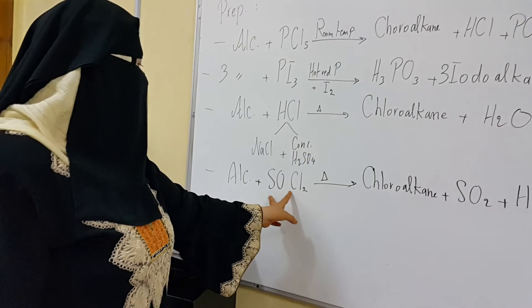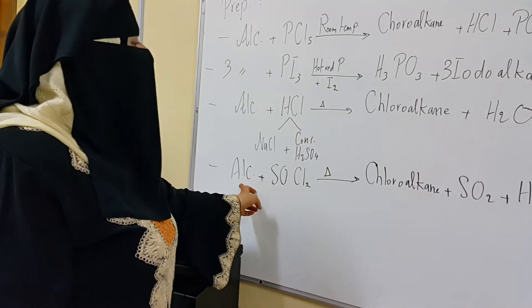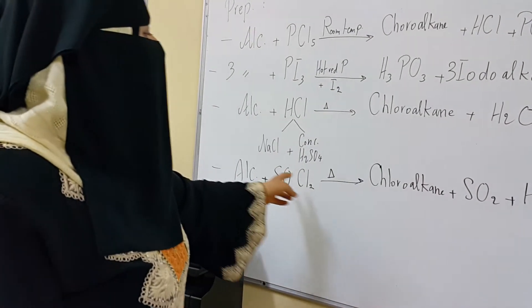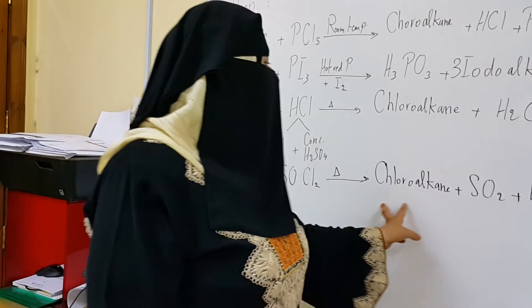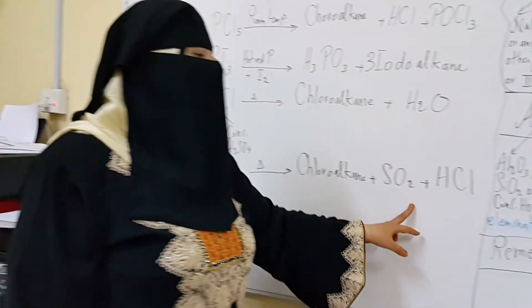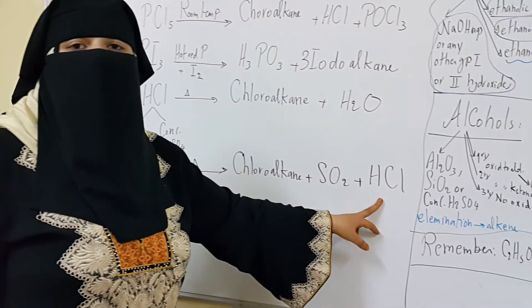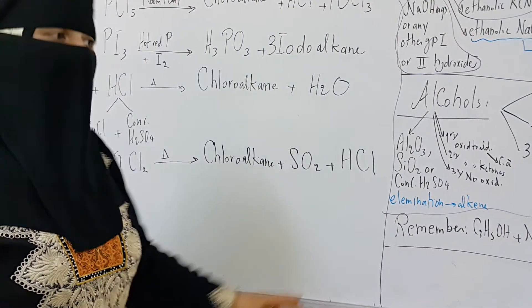Sulfur dichloride oxide reacts with alcohol to give the chloro-alkane, sulfur dioxide, and hydrogen chloride gas.